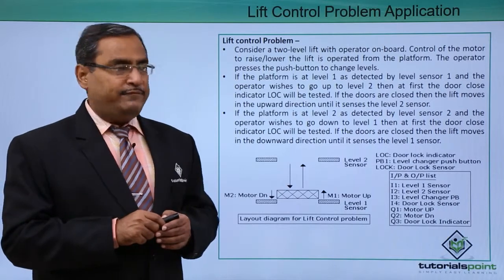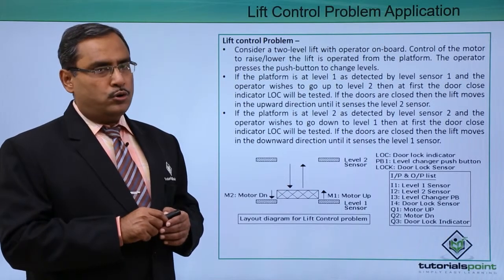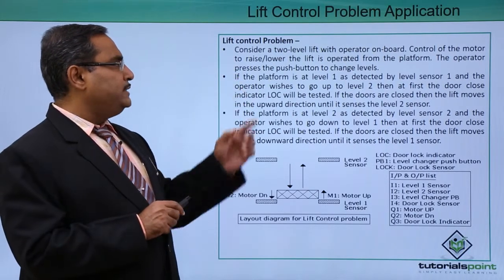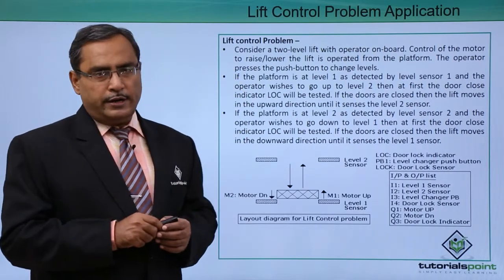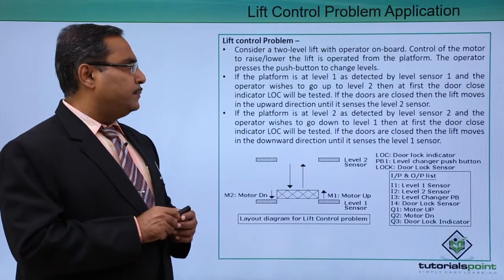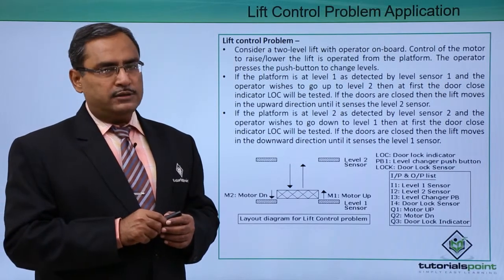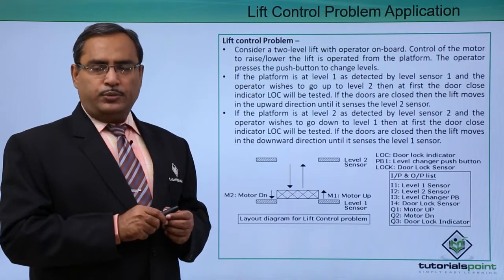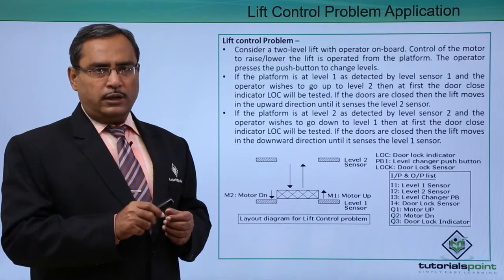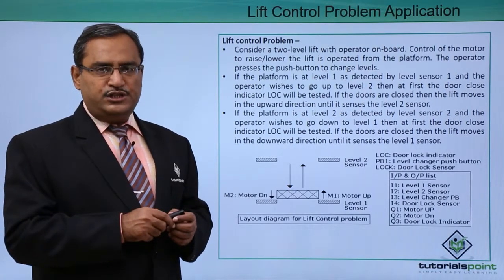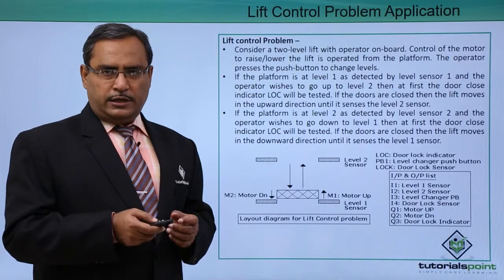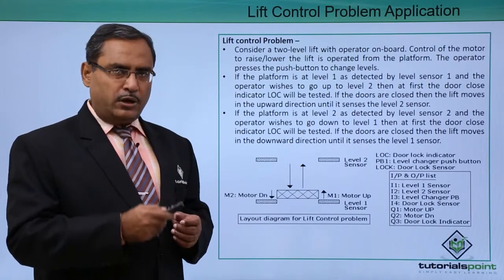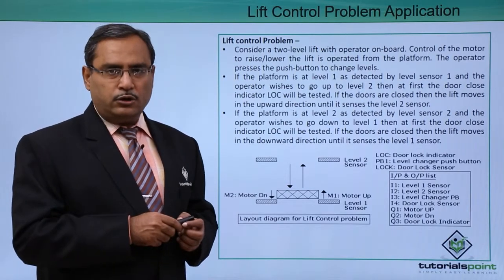Consider a two-level lift with an operator on board. The operator is controlling the lift; control of the motor to raise or lower the lift is operated from the platform. The operator presses a push button to change level. There is only one push button — no up or down buttons — because when the lift is at level one and the button is pressed, the lift goes to level two, and vice versa, depending upon certain conditions.